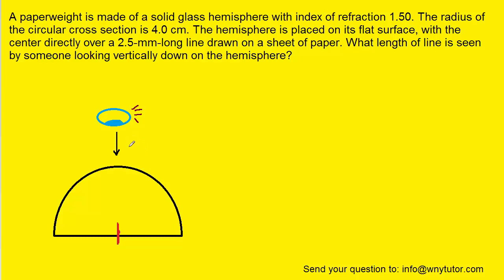We've gone ahead and drawn a picture of the scenario. We have a person looking down on the top of a hemispherically shaped paperweight, and then there's this line that's drawn, and the paperweight is sort of sitting on top of that line.